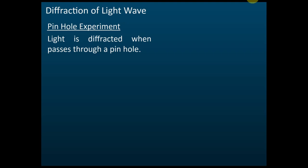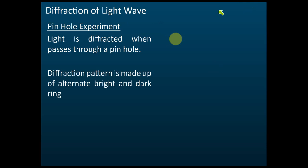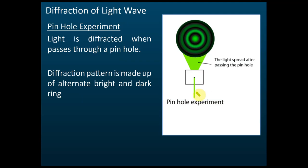For diffractions of light waves, we have two experiments. The first one is called the pinhole experiment. We use monochromatic light — light of one color. We let the light pass through the pinhole and we find that the light is diffracted. The diffraction pattern is made up of alternate bright and dark rings. The light passes through the pinhole, diffracts, and spreads to a wider area.